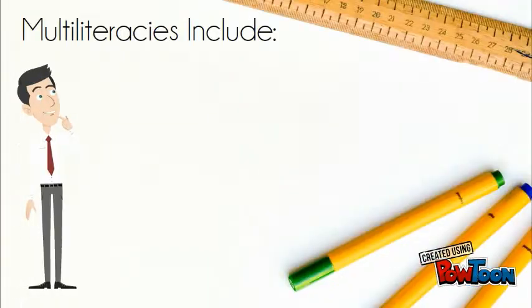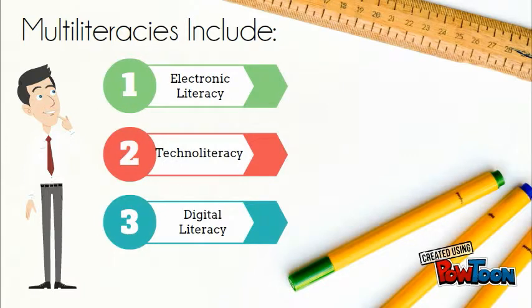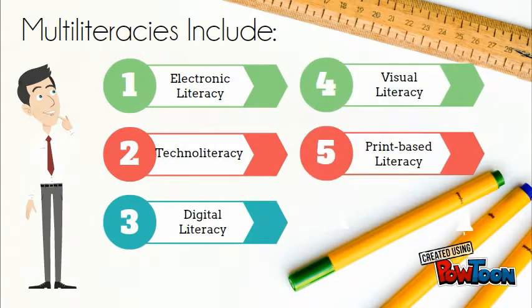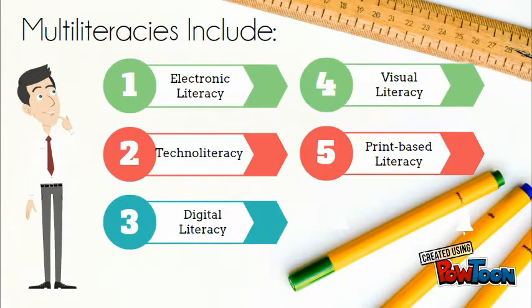There are five different types of multiliteracies: electroliteracy, technoliteracy, digital literacy, visual literacy and print-based literacy.